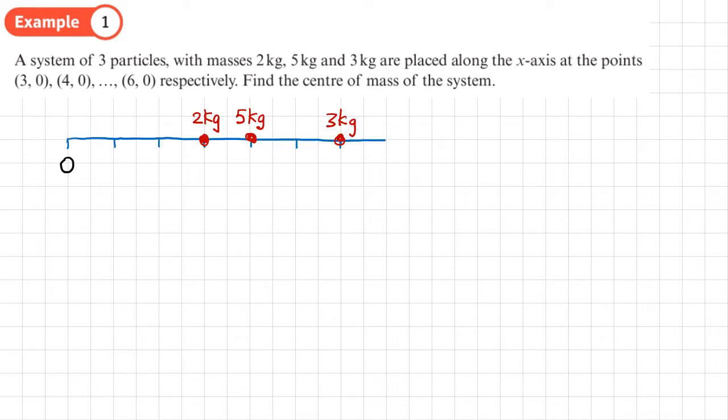Since they're placed on the x axis, I need to find x bar. And the way that I'm going to do that is to find the sum of each of these moments: the mass times its distance from O divided by the sum of the masses. So we'll start with the first moment, which is going to be a mass of 2 and a distance of 3. We add to that the second mass, a mass of 5, a distance of 4. And the last mass is a mass of 3 at a distance of 6. And we divide that by the sum of the masses. So 2 plus 5 plus 3.